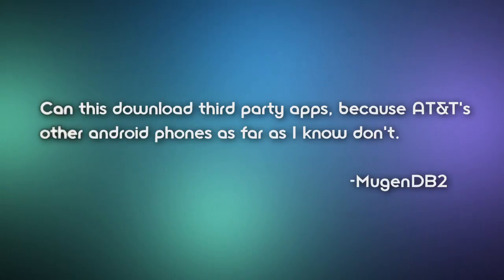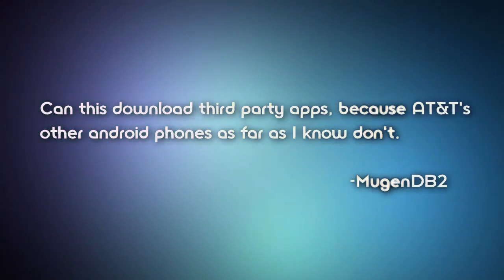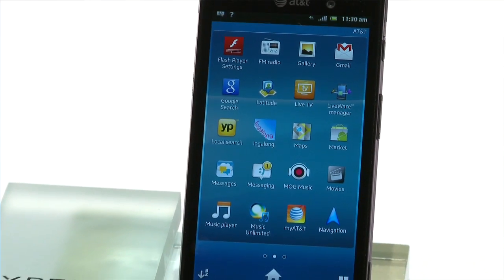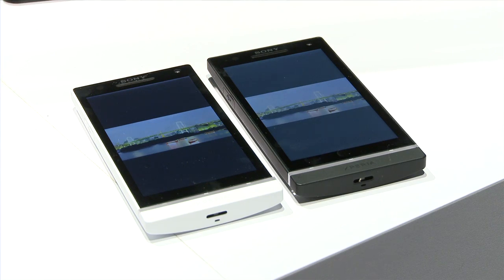Since NFC is an open system, any app developer can come up with their own unique use cases and apps or services that support it. Another Xperia Ion question: can this download third-party apps, because AT&T's other Android phones don't? Xperia phones on AT&T have full access to Android Market, which has more than 200,000 apps from developers and third parties. Regarding internal memory: the Xperia Ion has an expandable microSD slot, while the Xperia S is all internal memory — but at 32 gigs, that's plenty of space.